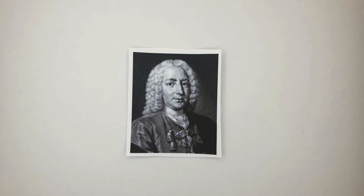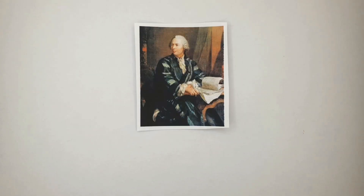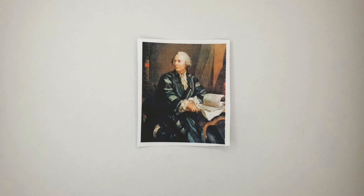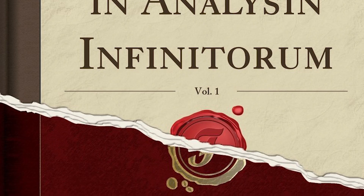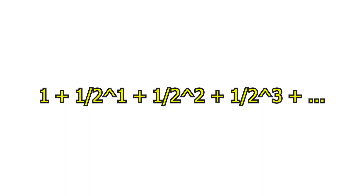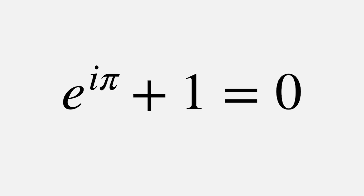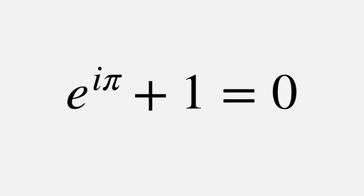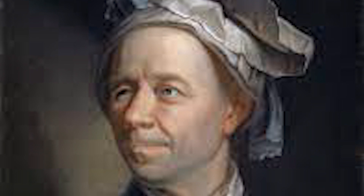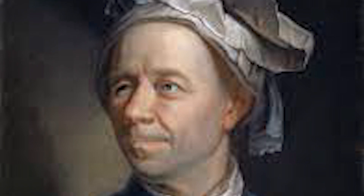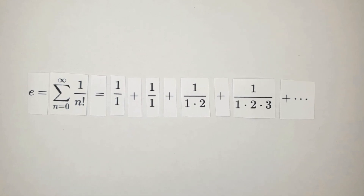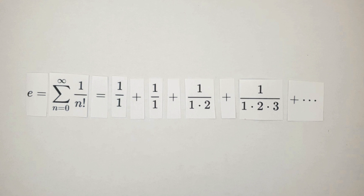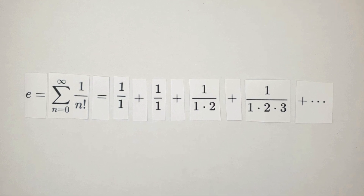But why is it called e? Although Bernoulli claimed to have discovered it, Leonard Euler was the first to publish it, and in 1748 he revealed the first 18 digits of the number and was the first to show that they were infinite — that e was an irrational number. Euler defined that it could be calculated as 1 + 1/1 + 1/(1×2) + 1/(1×2×3) and so on.